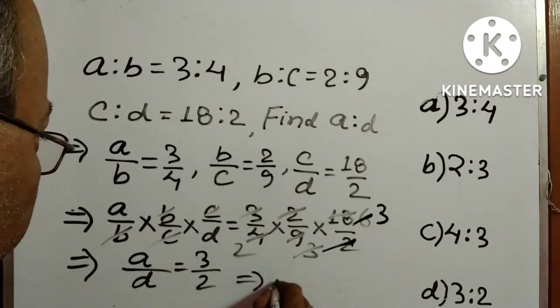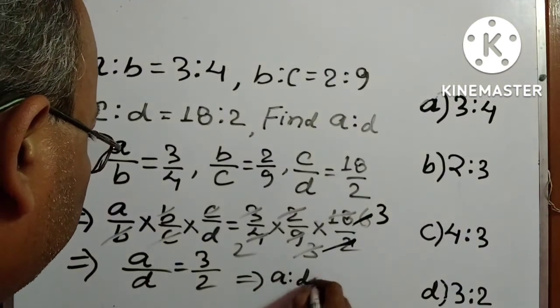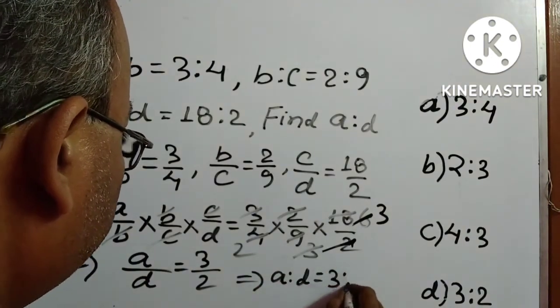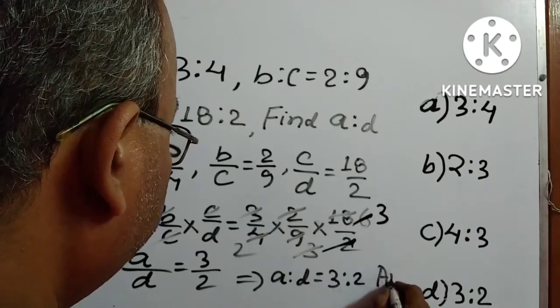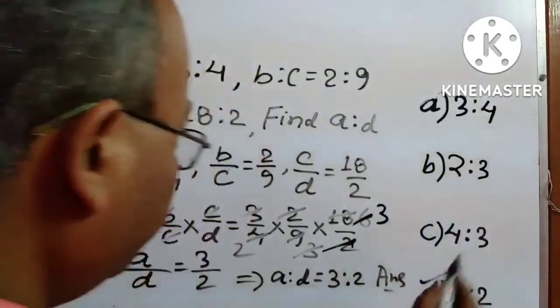So we can write it like this: A is to D equals 3 is to 2, and that is the answer. Answer is option D.